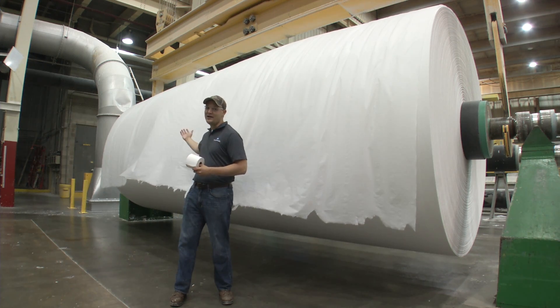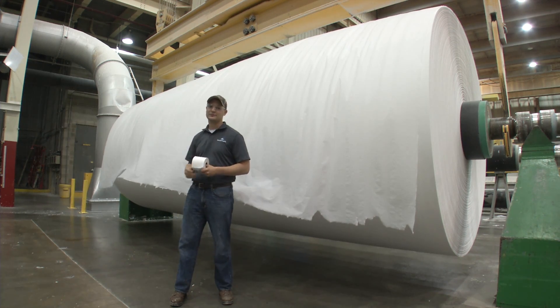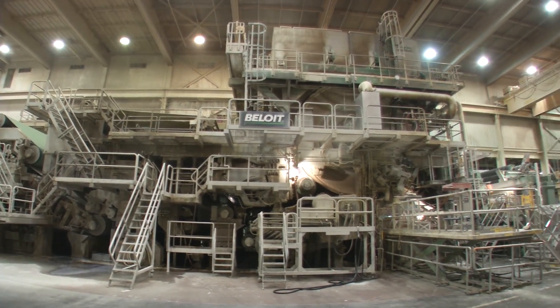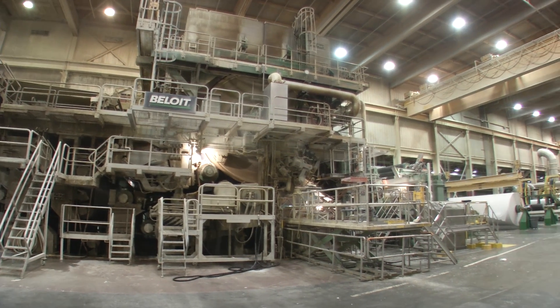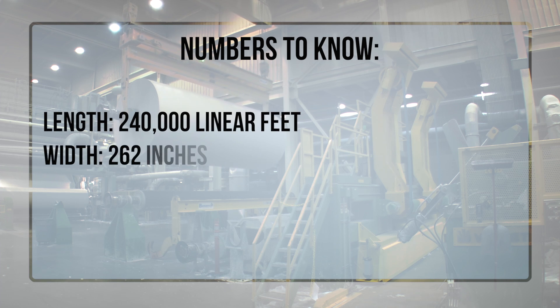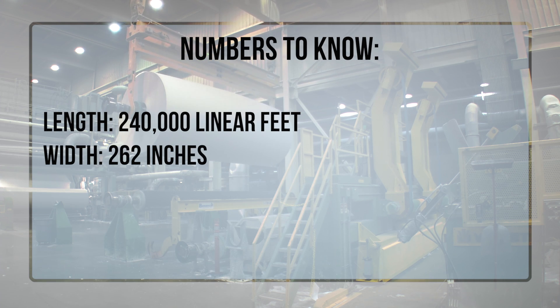This paper machine produces tissue at a rate of 5,000 feet per minute. In less than an hour it produces a huge parent roll of paper that weighs over seven and a half tons. This machine can produce 30 parent rolls each day. The width is 262 inches and contains 240,000 linear feet of paper.